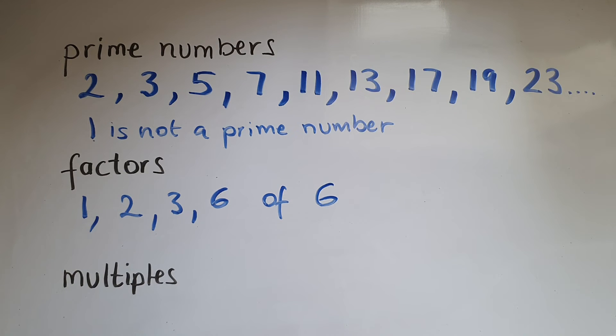Multiples are linked to the word multiply. So multiples of six, for example, would be six because six times one is six. Six times two is twelve. Six times three is eighteen. Six times four is twenty-four, and so on. You get the idea.